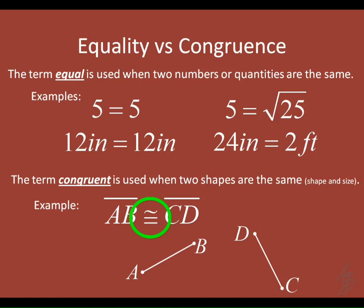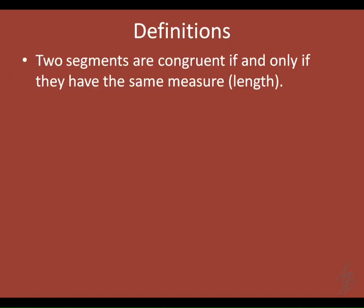A picture can help here since we're talking about shapes. We have two different segments, and the idea with congruence is we could take this line segment, pick it up, move it over on top of this line segment. We'd have to spin it a little bit, but they would look the same — same shape, same size. So they are congruent, and we mark congruent segments similarly to how we mark parallel lines.